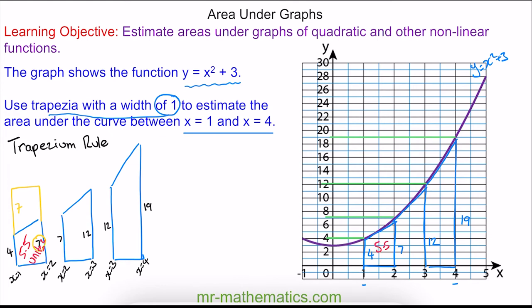And for the next one, the rectangle would have an area of 19, so the trapezium would have an area of 9.5. And our third trapezium will have an area of 15.5 units squared. So we can approximate the total area between x equals 1 and x equals 4 as 30.5 units squared.